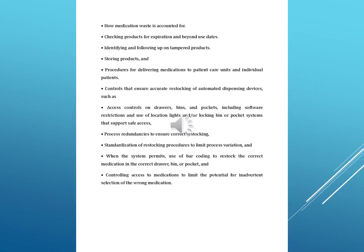Controls that ensure accurate restocking of automated dispensing devices, such as access controls on drawers, bins, and pockets — including software restrictions and use of location lights — or locking bin or pocket systems that support safe access. Process redundancies to ensure correct restocking. Standardization of restocking procedures to limit process variation. When the system permits, use of barcoding to restock the correct medication in the correct drawer, bin, or pocket. Controlling access to medications to limit the potential for inadvertent selection of the wrong medication.